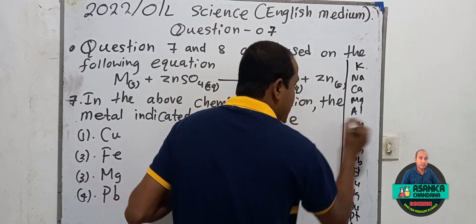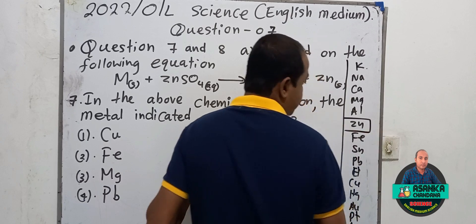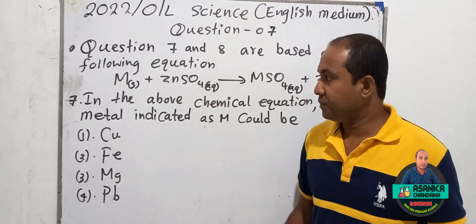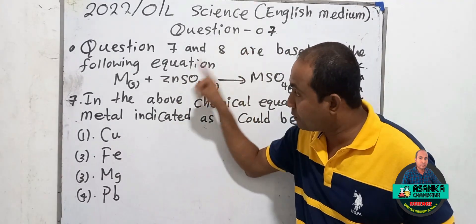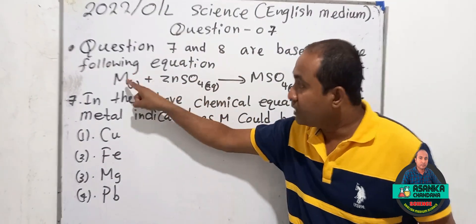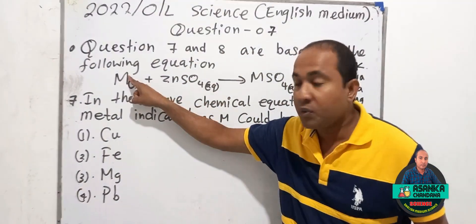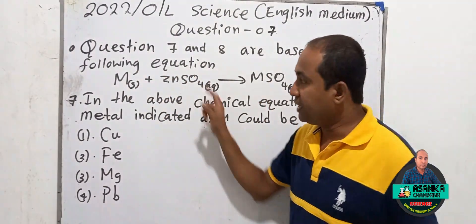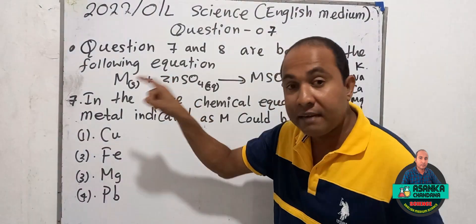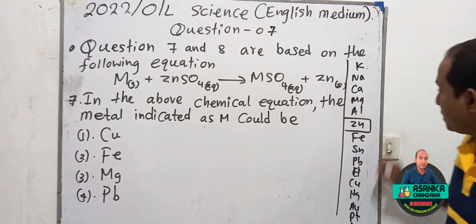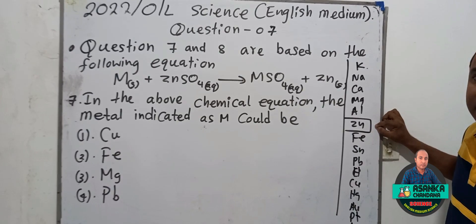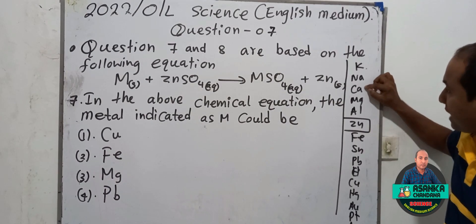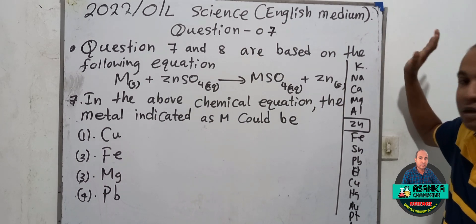In the reactivity series, zinc is located here. For this chemical reaction to occur and displace zinc, the reactivity of M should be higher than zinc. So M may be aluminium, magnesium, calcium, sodium, or potassium — any of these could work.